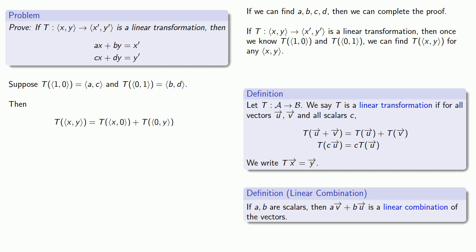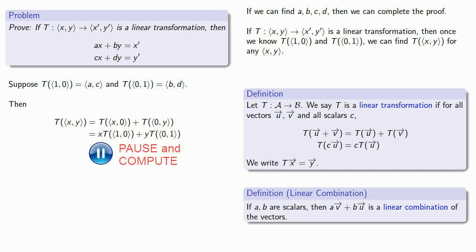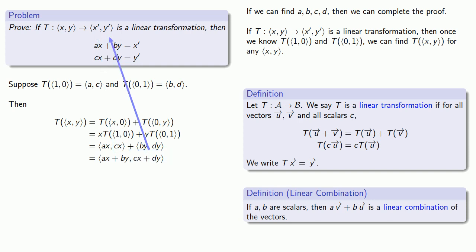Because it's a linear transformation, I know how it handles scalar multiples. The transformation applied to (x, 0) will be the same as x times the transformation applied to (1, 0). And likewise, the transformation applied to (0, y) will be the same as y times the transformation applied to (0, 1). But I know what the transformation does to these vectors, and so the transformation applied to (x, y) is going to be (ax + by, cx + dy). So the new x value is ax + by, and the new y value is cx + dy, and that's what we wanted to prove.